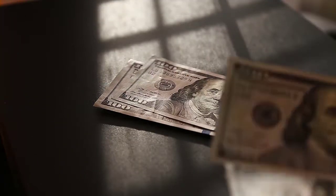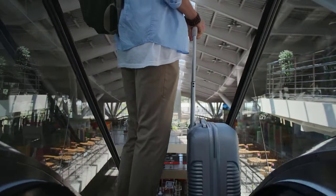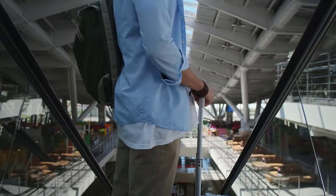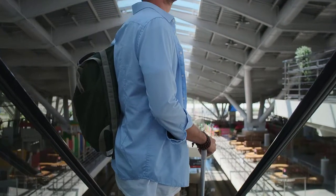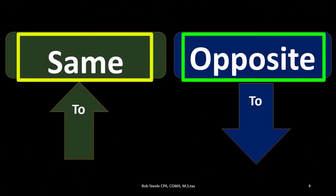Once we know that, or once we have this cheat sheet in front of us, we can apply the rule, which is very simple. If we want to make an account go up — for example, if we want cash to go up — we would do the same thing to it as its normal balance. If we want to make an account go down — for example, if we want cash to go down — we do the opposite thing to it as its normal balance.